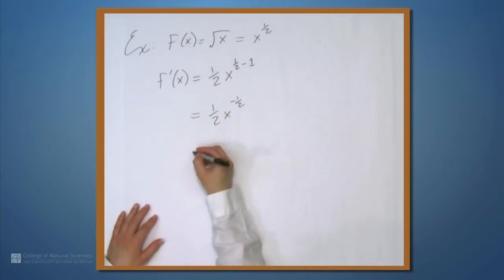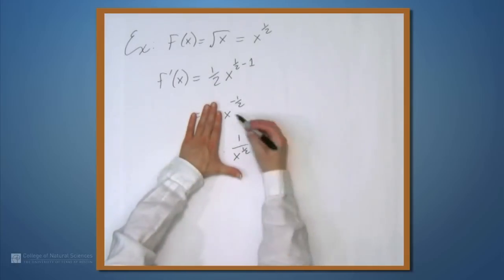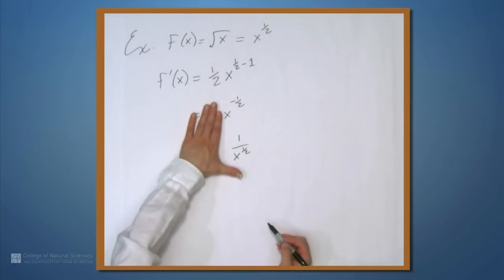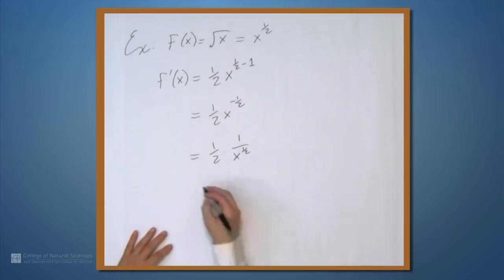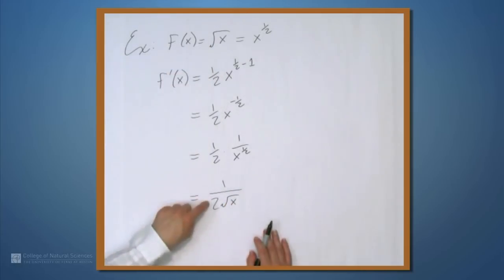Now if we want to get rid of the negative, we can flip that x to the negative 1 half into the denominator. So we get 1 half times 1 over x to the 1 half. x to the negative 1 half is the same as 1 over x to the 1 half. We can rewrite this finally as 1 over 2 times the square root of x. So the derivative of the square root of x is 1 over 2 times the square root of x.